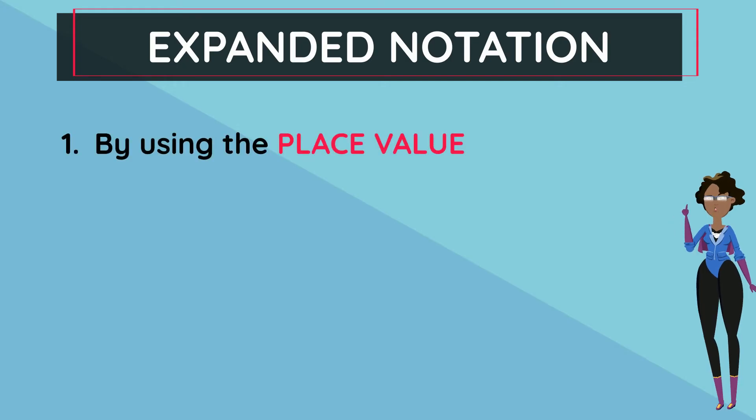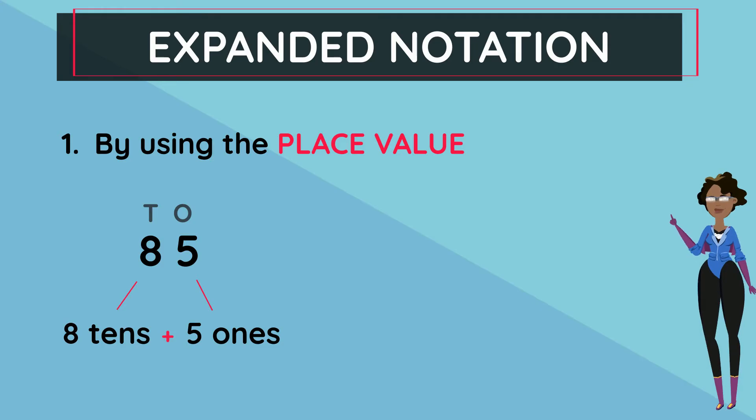For example, the number 85: the 8 in the number 85 represents 8 tens, and the 5 in the number 85 represents 5 ones. Another example is the number 41: the 4 in 41 represents 4 tens, and the 1 in 41 represents 1 one.